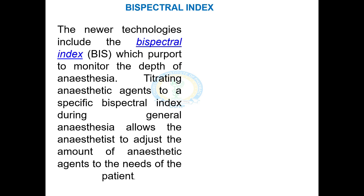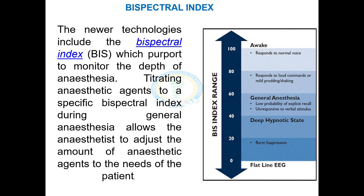The Bispectral Index (BIS) is a newer technology that purports to monitor the depth of anaesthesia. It allows the anaesthetist to adjust the amount of anaesthesia to the patient's needs. This index ranges from 100 to 0. A value of 100 represents full wakefulness. The range of 60 to 40 coincides with stage 3 where major surgical procedures are carried out. From 20 to 0, the index resembles stage 4, in which death could occur due to respiratory collapse.